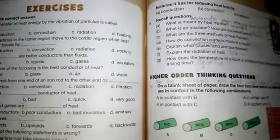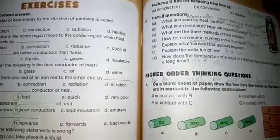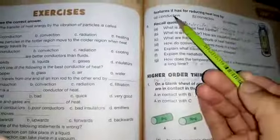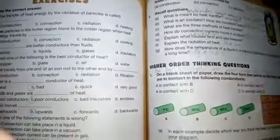Part C is: what are three methods of heat transfer? The answer is A conduction, B convection, C radiation.